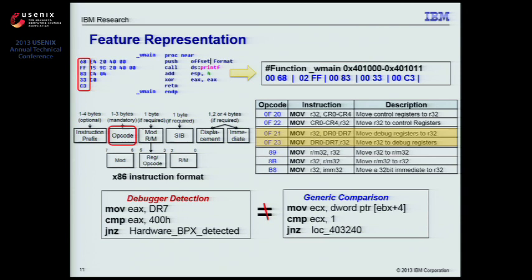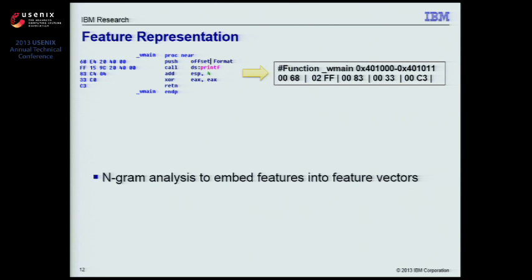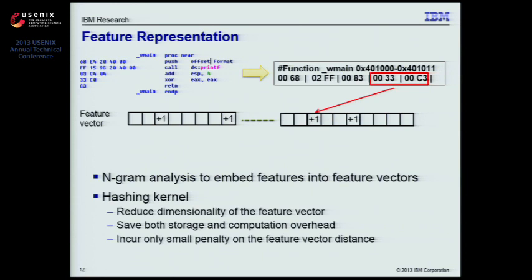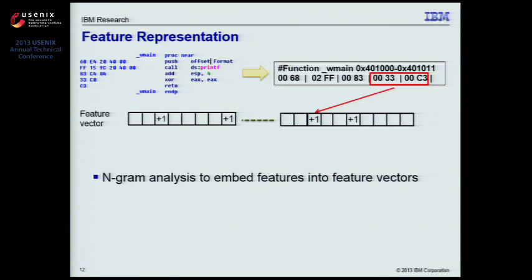Given this opcode sequence, MaltonX applies standard n-gram analysis on the opcode sequence to convert and embed these features into a fixed-length feature vector, where each element is the number of occurrences of a particular n-gram, such that the distance or similarity between malware programs can be measured as a distance in feature vector space. With this feature vector, we can apply a clustering algorithm to group similar malware.